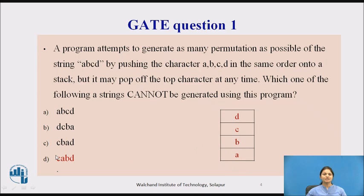In the third case, after pushing a, b, c — c is popped, then b is popped, then a is popped, and lastly d is pushed and popped — so that is possible. But in the last case, after pushing a, b, c — c is popped, and after that the program wants to pop a, but it is not possible because b is still in the stack. So the string 'cabd' cannot be generated using this program.